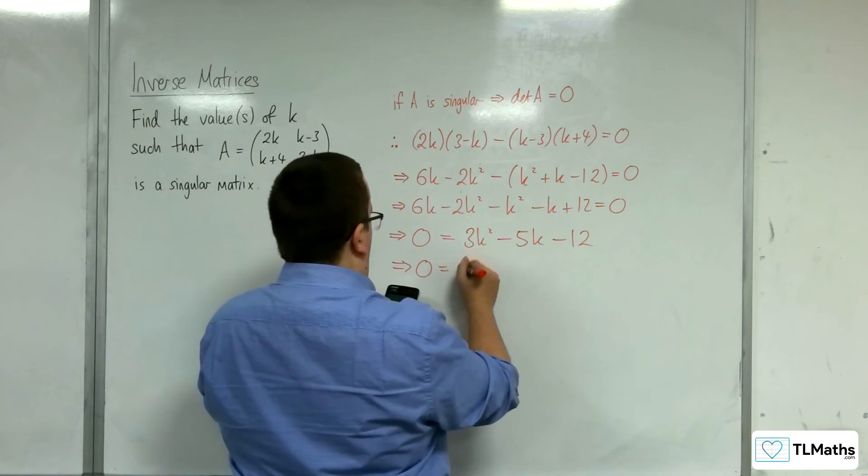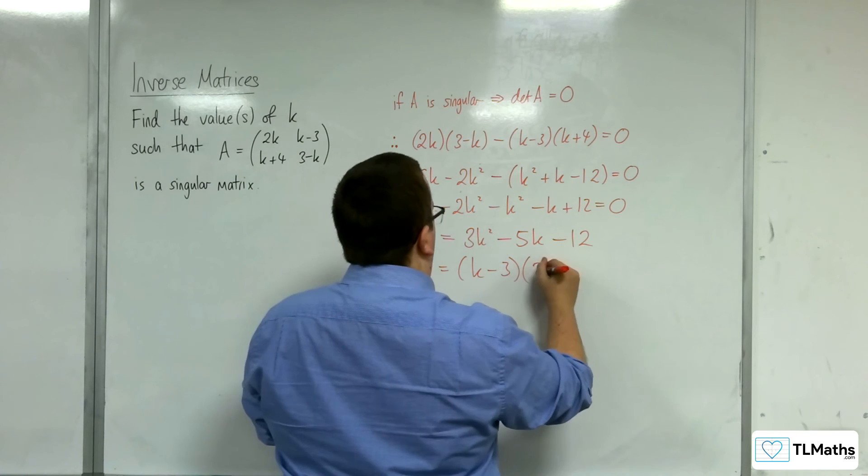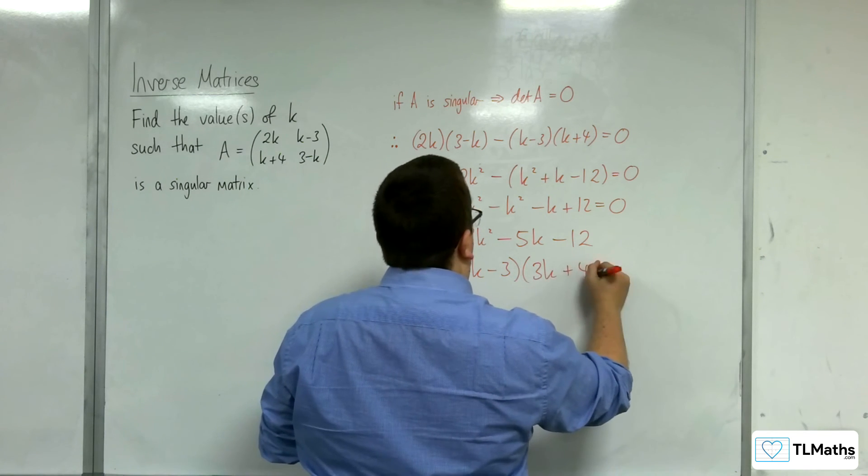So 0 is equal to k minus 3 times 3k plus 4 then, right?